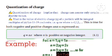For example, for n equals one, q equals to one e. For n equals 2, q equals to 2e. n equals 3, q equals to 3e. In general, for n equals to n, q equals to n e. This is quantization of charge.